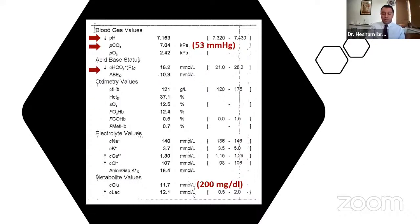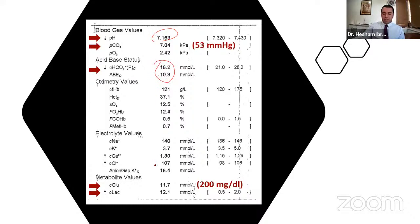The bicarbonate was 18.2 and base excess was minus 10, confirming metabolic acidosis. Blood glucose was 11.7 mmol/L (about 210 mg/dL), and the lactate was 12 — which was really alarming. The low pH, low bicarb, and negative base excess pointed to metabolic acidosis. With blood sugar above 11, DKA was first on my differential.